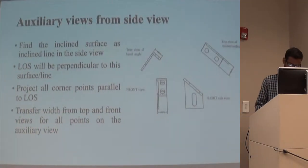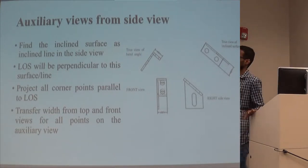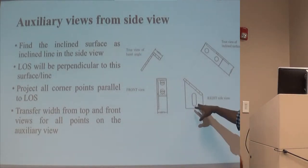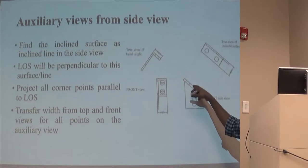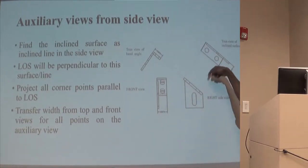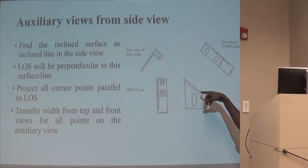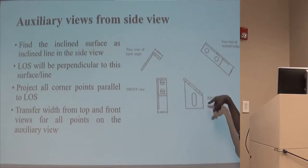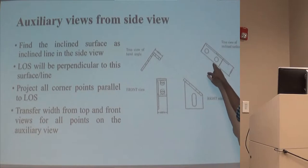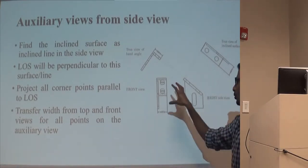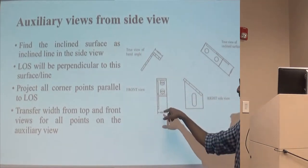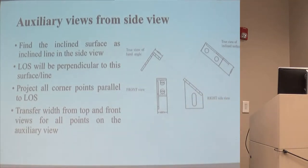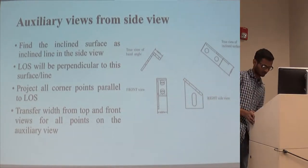The second case is auxiliary view projected from the side view. If you have your front and side views given and are asked to sketch an auxiliary view from the side view, you would need to select an inclined edge. Your line of sight would be perpendicular to that surface. You project all the corner points perpendicular to that inclined edge, or perpendicular to the parallel line that you have drawn. And you would transfer your width information from the front — when going about the side view, you transfer the width from either the front or the top, whichever is given.